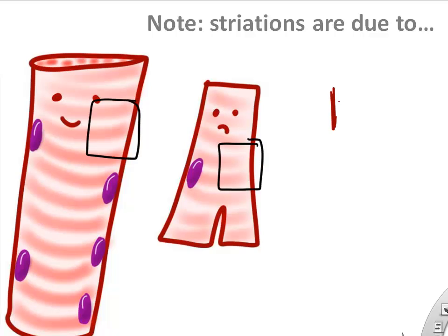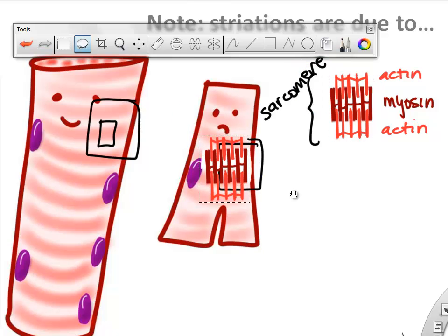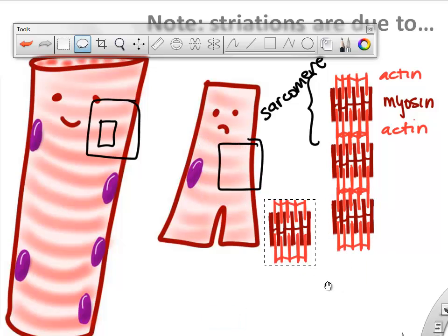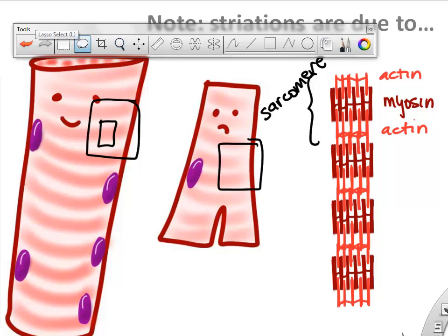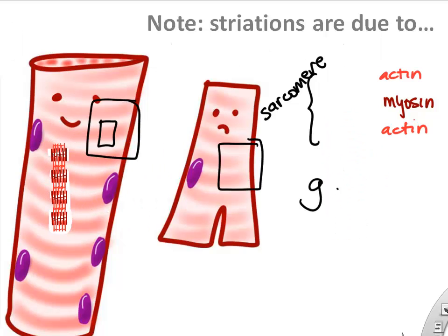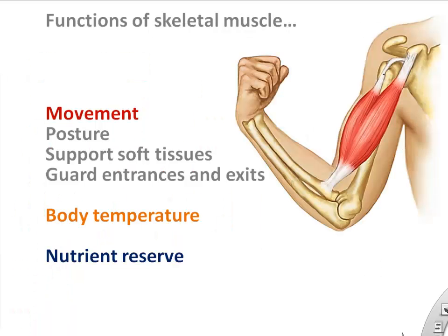A note on striations: what causes them is the pattern of actin and myosin, the proteins that allow muscle contraction. The most simple unit of contraction inside a muscle cell is the sarcomere, which is basically a repeating pattern of actin and myosin. If you look inside the cell and shrink down to those proteins, you can see from far away on a microscope that they cause the striping, or striations.